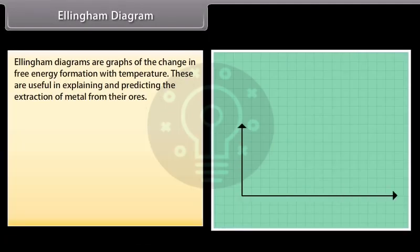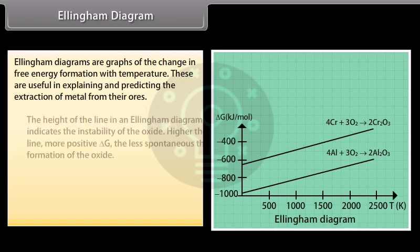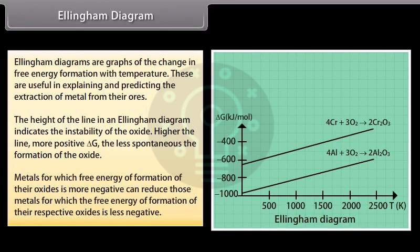Elingham diagram. Elingham diagrams are graphs of the change in free energy formation with temperature. These are useful in explaining and predicting the extraction of metal from their ores. The height of the line in an Elingham diagram indicates the instability of the oxide. Higher the line, more positive delta G, the less spontaneous the formation of the oxide. Metals for which free energy of formation of their oxides is more negative can reduce those metals for which the free energy of formation of their respective oxides is less negative.